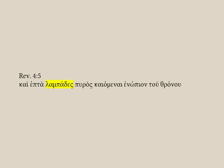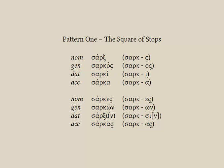Here in Revelation 4:5, we have a third declension ending on a dental stem. The epsilon-sigma is clear — it's going to be a nominative plural. And when the stem ends in a dental and you add the sigma, the dental drops out. So our lemma is Lampas.